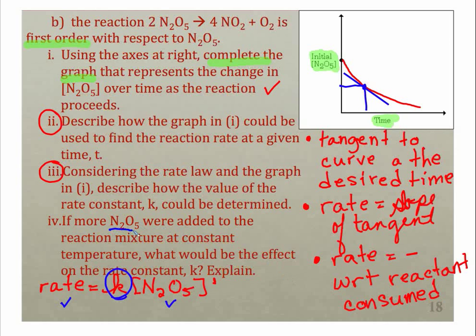Now here it says if more N2O5 were added to the reaction, what would be the effect on K? Read that very carefully. It didn't ask what was the effect on the rate. It asked what's the effect on K? For this one, what we would have is nothing, nada.